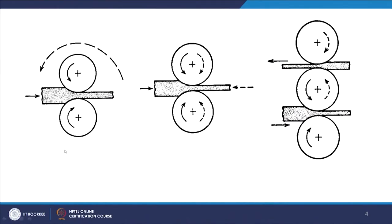The simplest type is the 2-high rolling mill, which has two rolls rotating in opposite directions — one anti-clockwise and one clockwise. The stock is fed from one side and comes out the other side. It is called a 2-high rolling mill because two rolls are used to deform the work piece.